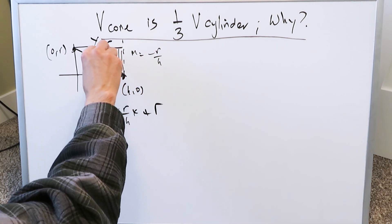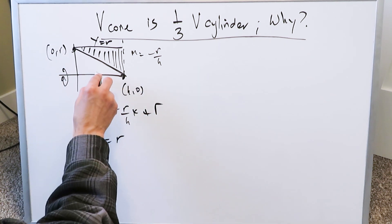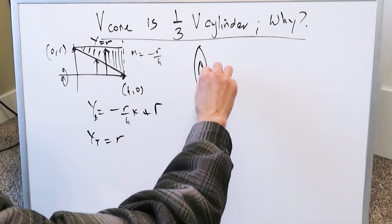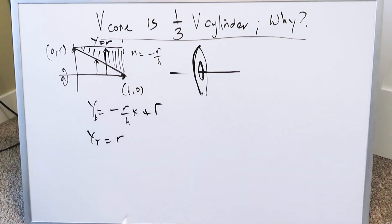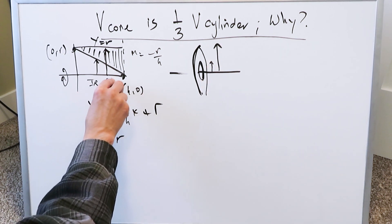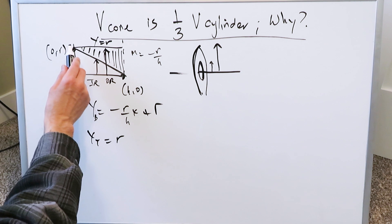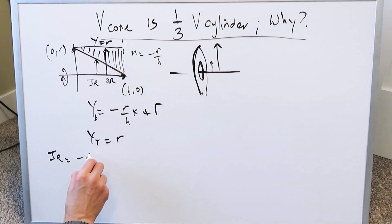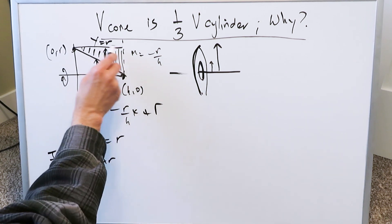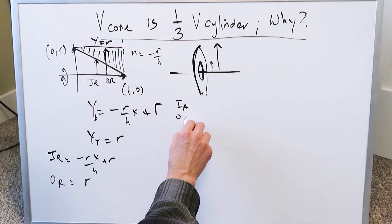If you look at the region between these two lines and rotate it around the x-axis, you develop that difference. Taking a cross-sectional slice gives you a washer shape. That washer has an inner radius and an outer radius. The inner radius extends up to the diagonal line, given by the equation (−rx/h + r), and the outer radius is simply r, going from the x-axis all the way up to r.